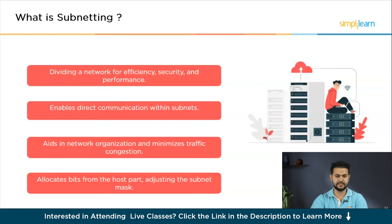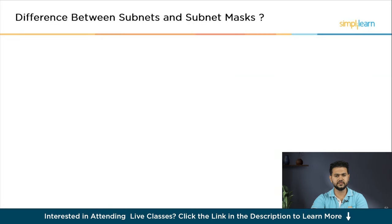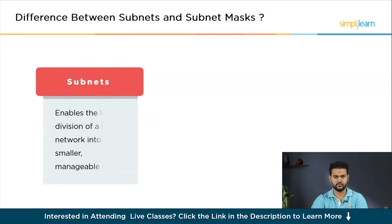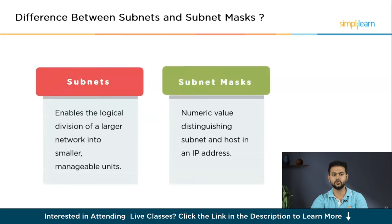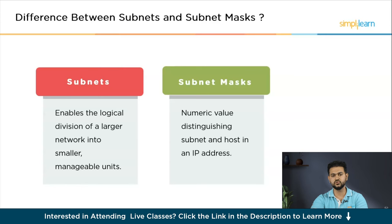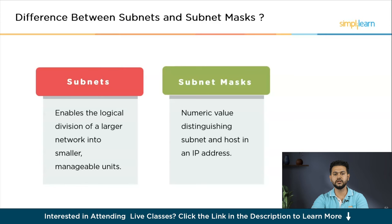Now let's understand the difference between subnets and subnet masks. The distinction is crucial to understanding network architecture. While the subnet mask plays a pivotal role in the concept of subnets, they are distinct entities. A subnet, short for subnetwork, refers to a specific segment of the network. This segment shares the overall network's IP address but possesses a unique subnet address. Essentially, a subnet allows for the logical division of a larger network into smaller, more meaningful units.